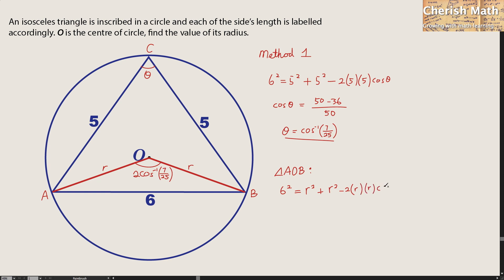and times cos with this angle, 2 times the cos inverse 7 over 25. Let me rearrange this to become 2R squared minus 2R squared and I'm going to take up this part. R is equal to 36.